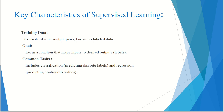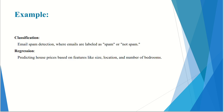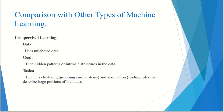The supervised learning process includes data collection, model training, prediction, and evaluation. Common examples are classification and regression. This is followed by a comparison with other types of machine learning, including unsupervised learning.